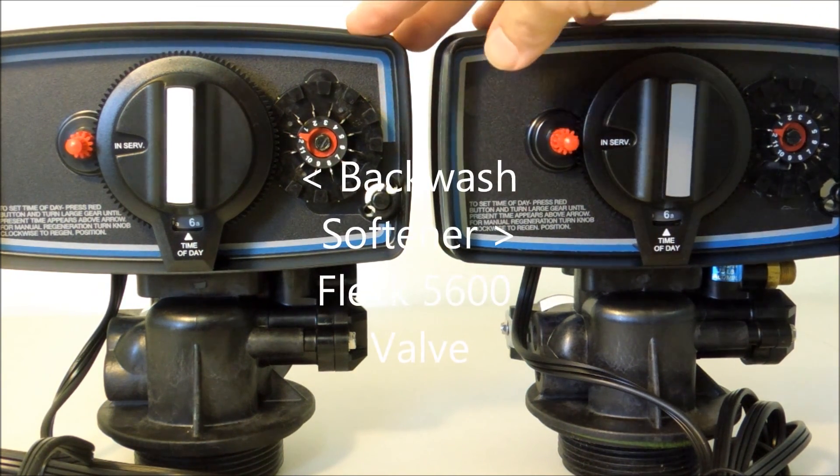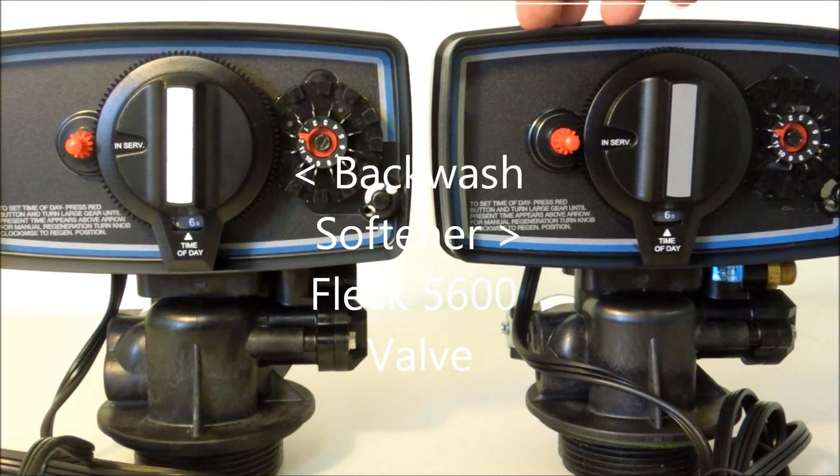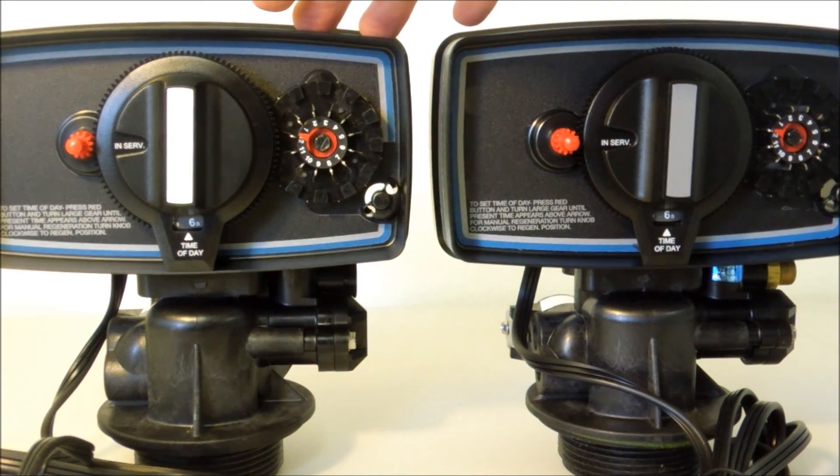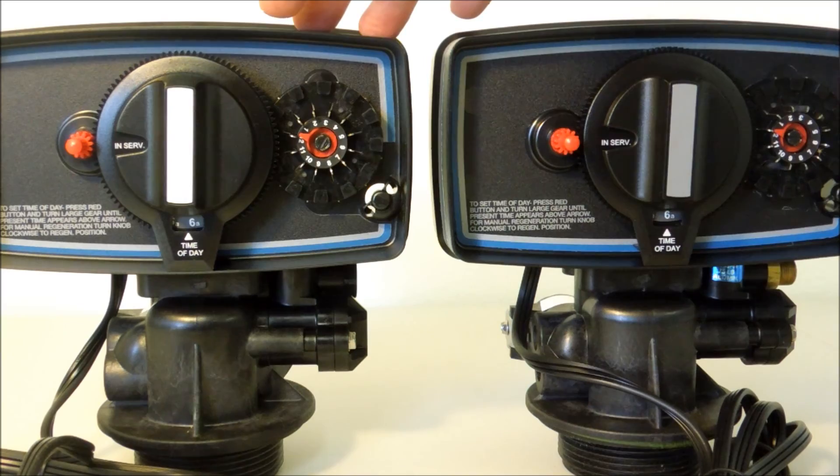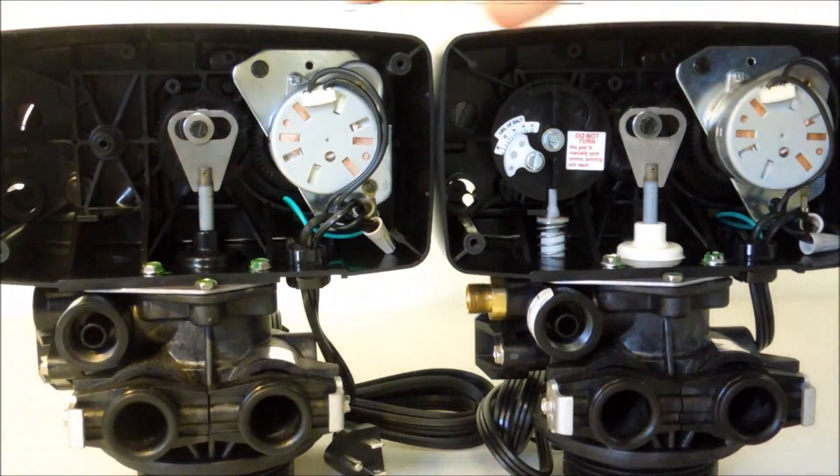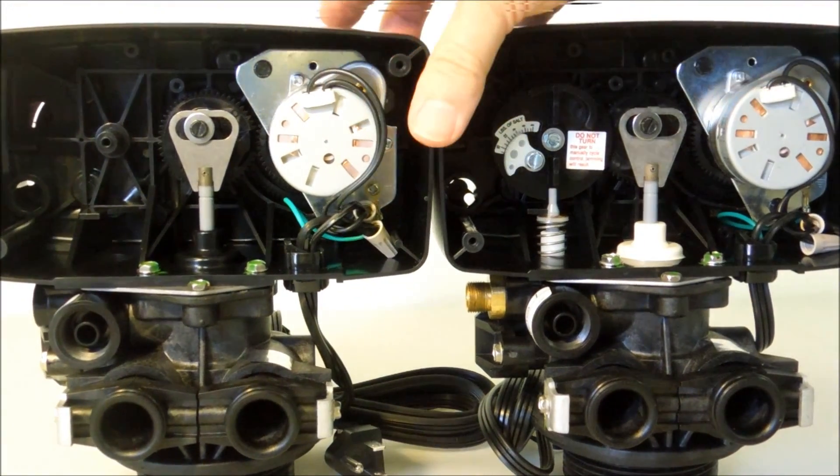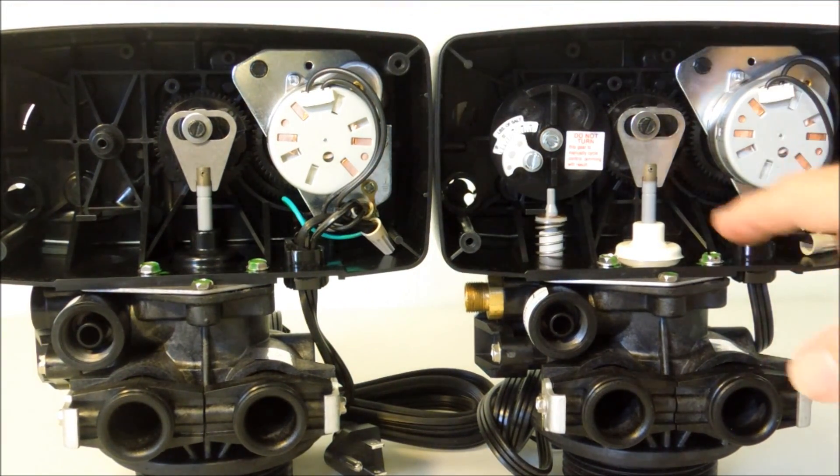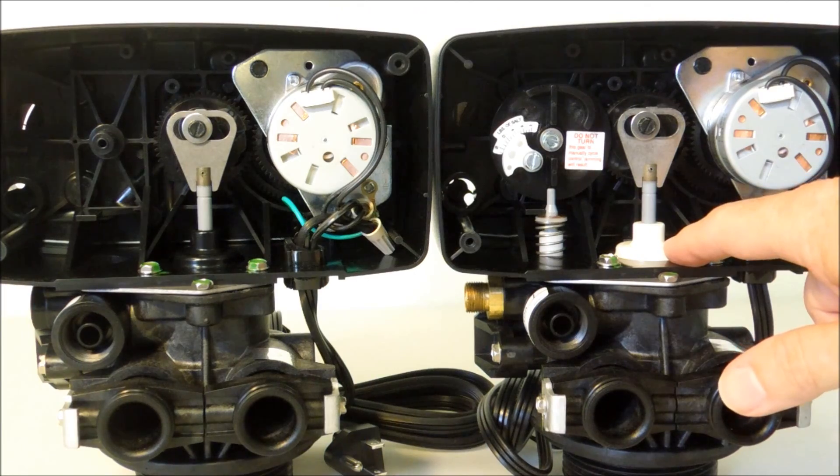The Fleck 5600 12-day softener and 12-day backwash look basically the same from the front, but if you look in the back with the covers off, you'll see differences.